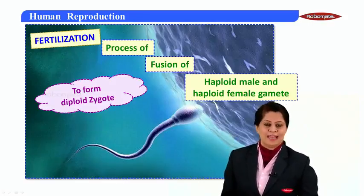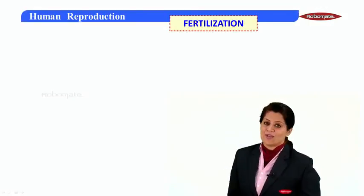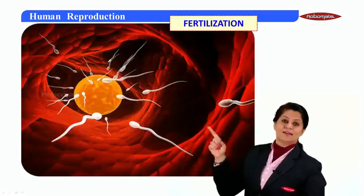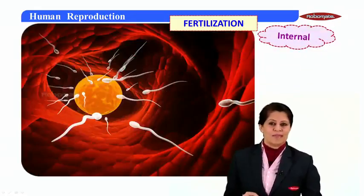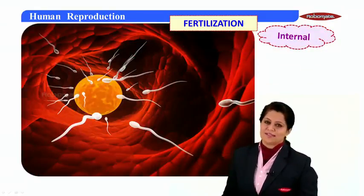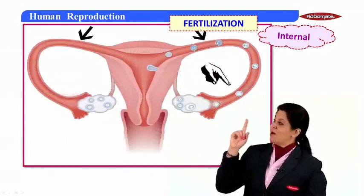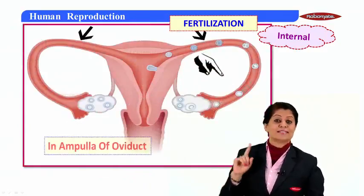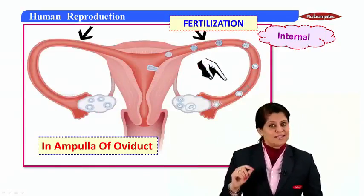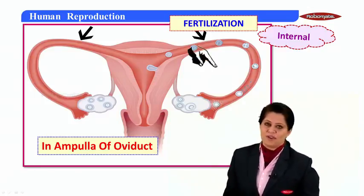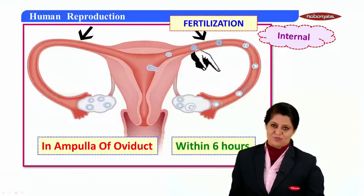Let's do the detailing of fertilization. When we talk about fertilization in humans, it is internal — that means it takes place inside the body of the female. But where exactly? It takes place in the ampulla of the oviduct, the longest section of the oviduct. Fertilization occurs in the ampulla of the oviduct, normally within 6 hours of ovulation.